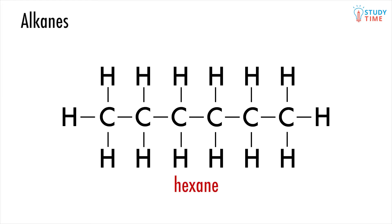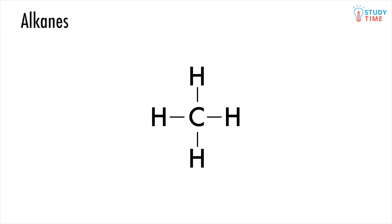To start off with, we'll look at a group called alkanes, which are the simplest of the organic compounds. An alkane is just a chain of carbon atoms covalently linked together, and since each carbon needs its four bonds, bonds that aren't attached to another carbon get attached to a hydrogen. The simplest alkane has only one carbon, and we call it methane. The prefix 'meth' corresponds to the number one, and the suffix 'ane' corresponds to the type of organic compound.